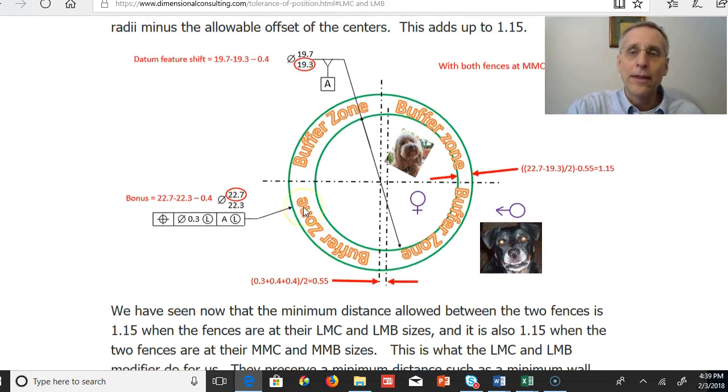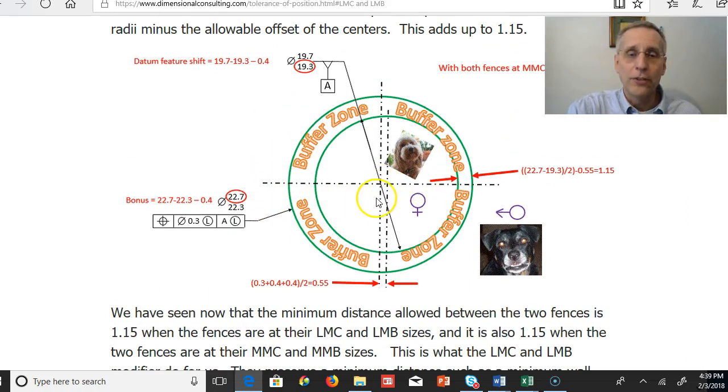So then the total amount that the two centers could be offset from each other is equal to the original 0.3 plus the 0.4 bonus tolerance plus the 0.4 datum feature shift. But then divide that by 2 to get it all radial. And so then the offset that the centers could be is 0.55.